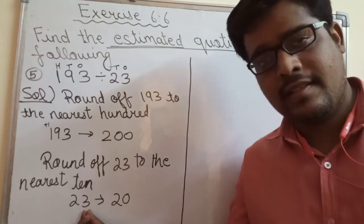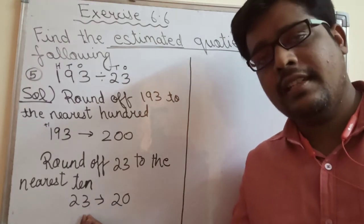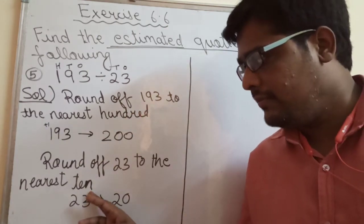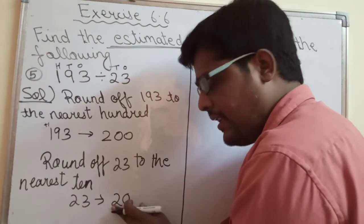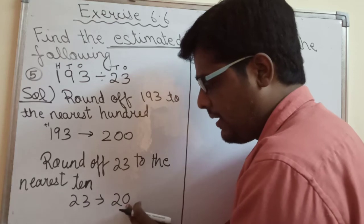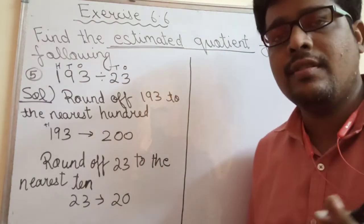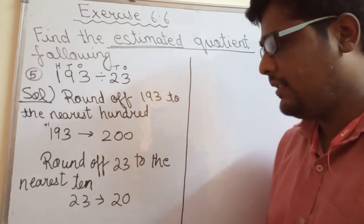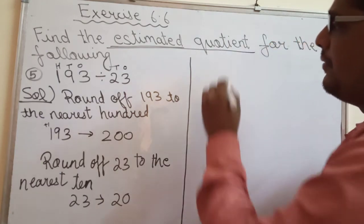Tens mein hum kya karte hain? Ones place ka number dekhte hain. If the number in ones place is less than 5, to hum tens mein kuch add nahi karenge. Wo waise hi hoga - 2. Aur jo number humne dekha hai wahan par 1, 0 lagega. You can see my videos also, earlier videos of rounding off. There you can understand it. Ab humne dono ko round off kar diya hai. Now we will divide.